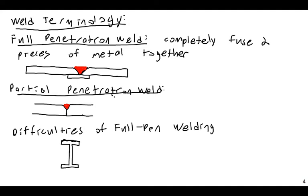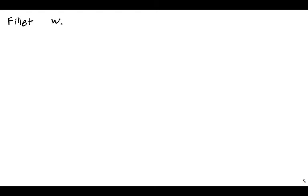Full pen welds are easier to design — as a structural engineer, you can simply prescribe a full pen weld and the weld material is generally a little bit stronger than the base material. But actually building and constructing it is much more difficult. Fillet welds are more common and a lot easier to construct; it's much easier for a welder to put together a fillet weld than a full pen weld.